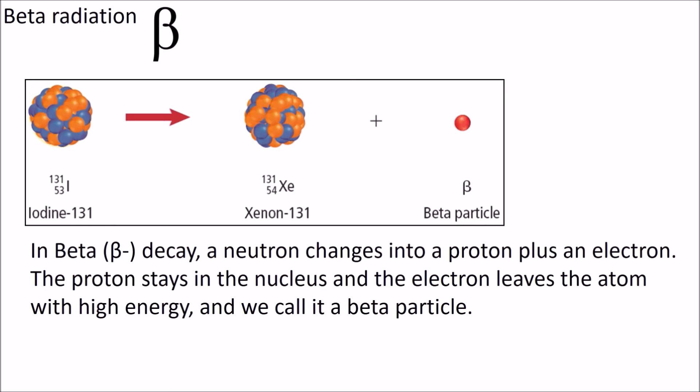In beta decay, a neutron in the nucleus turns into a proton and an electron. Okay, a neutron actually physically turns into a proton and an electron. The proton stays where it is, stays in the nucleus, and the electron is fired out of the atom. So the mass number stays the same. A neutron weighing one has turned into a proton which also weighs one, so no change in the mass number. But the bottom number, the proton number, that has to go up by one because we've gained an extra proton. So that's beta radiation.